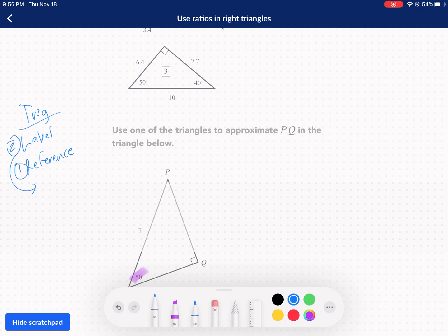So here we have our reference angle, and then we can label the sides from there. We have opposite, adjacent, and hypotenuse. Here's our 50-degree angle here. And then we can label these sides again: hypotenuse, opposite side, and adjacent side.